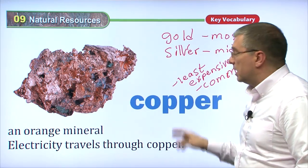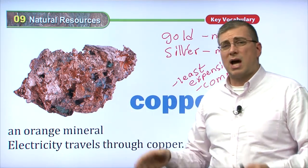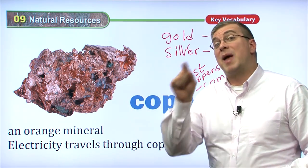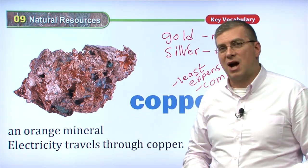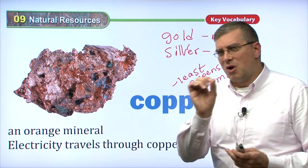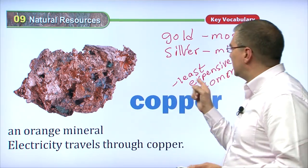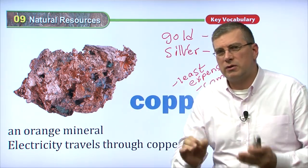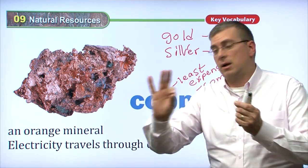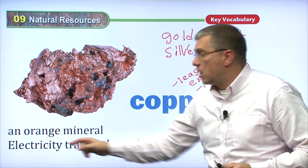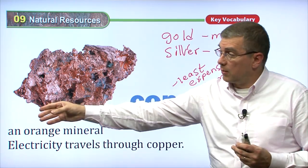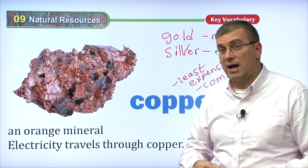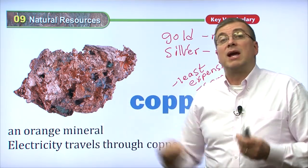Electricity travels through copper. Although we used copper a lot for money — and we still do; if you look at American money, the penny is made of copper — the most we use copper for is for wires and electricity. When we want electricity to come from the plug in the wall to our computer or electronic device, that wire is made of copper.